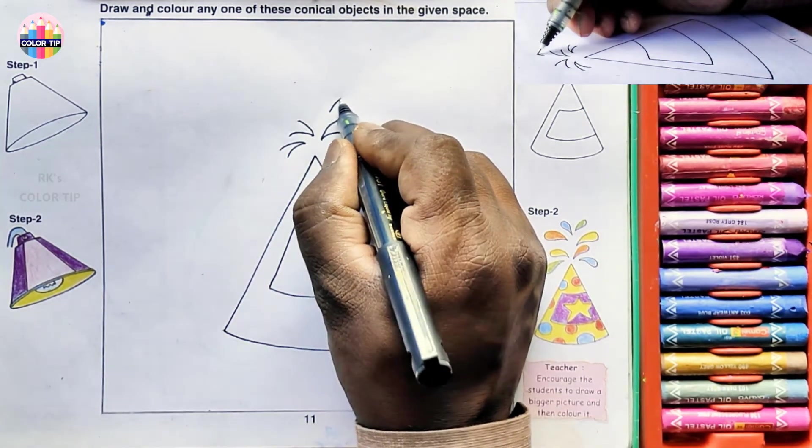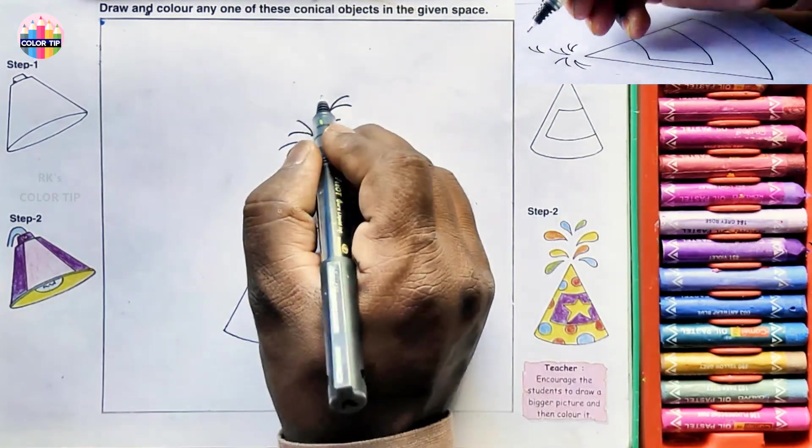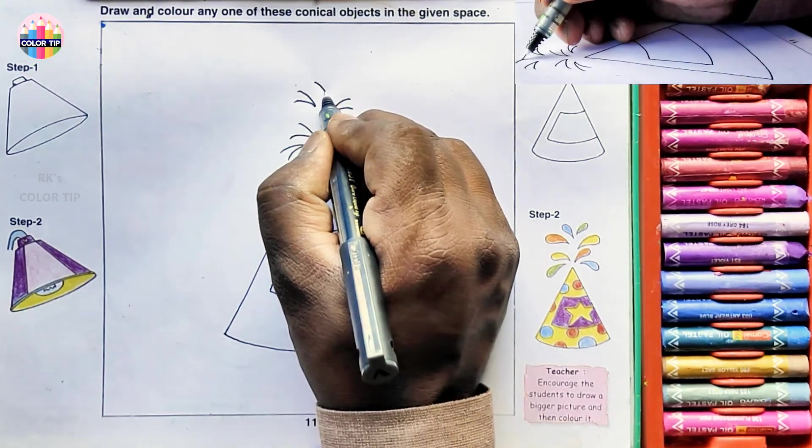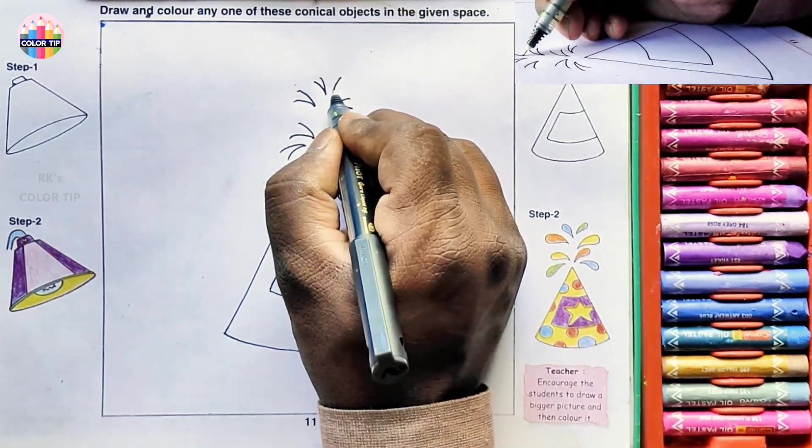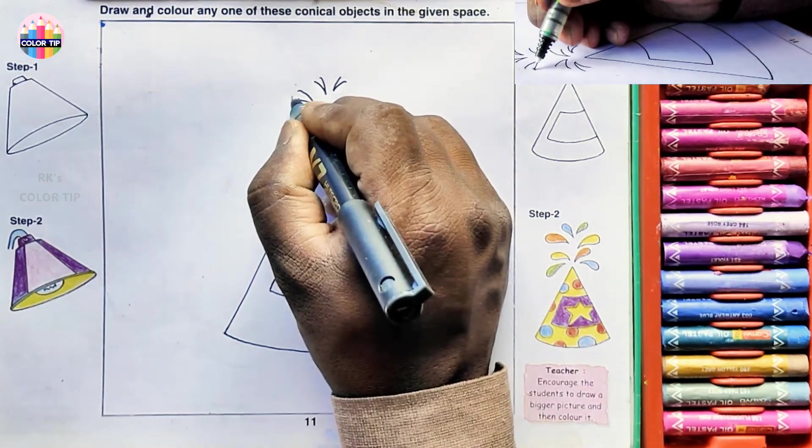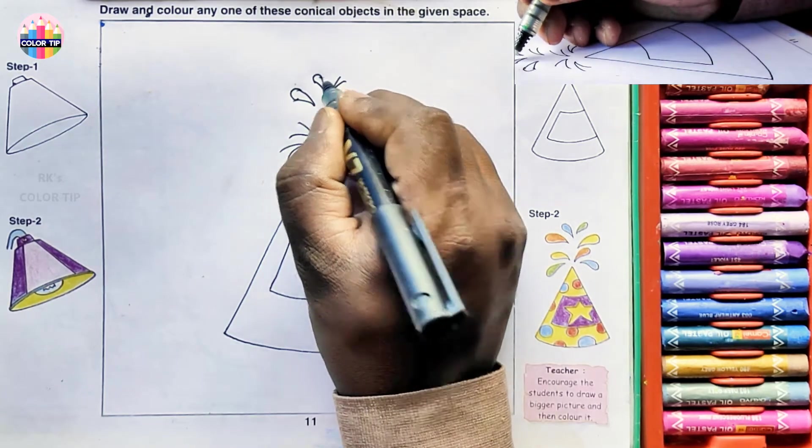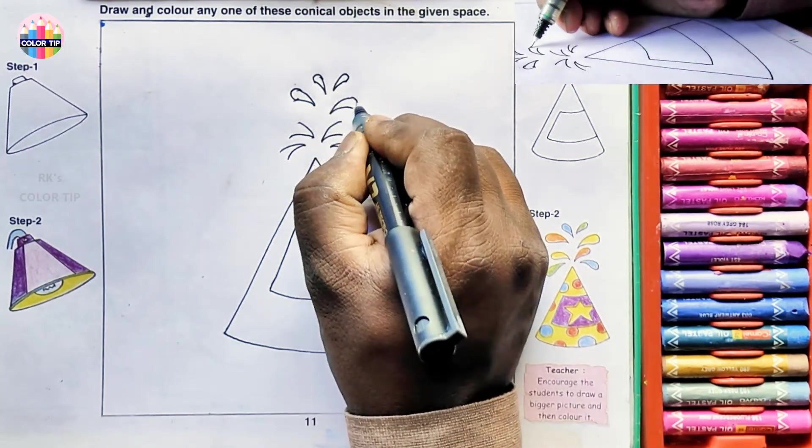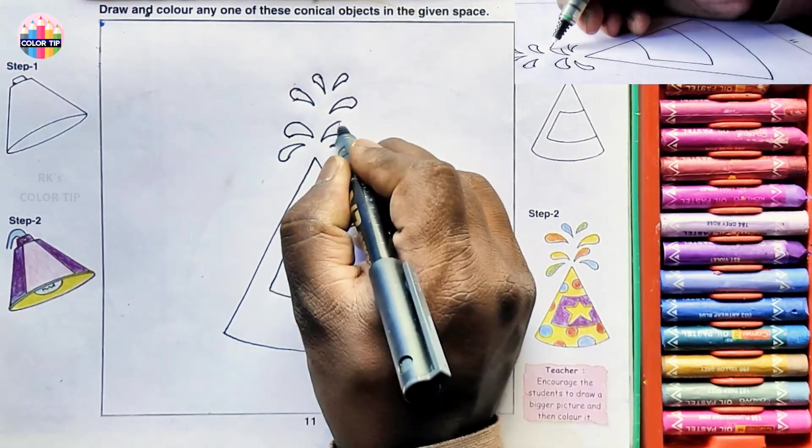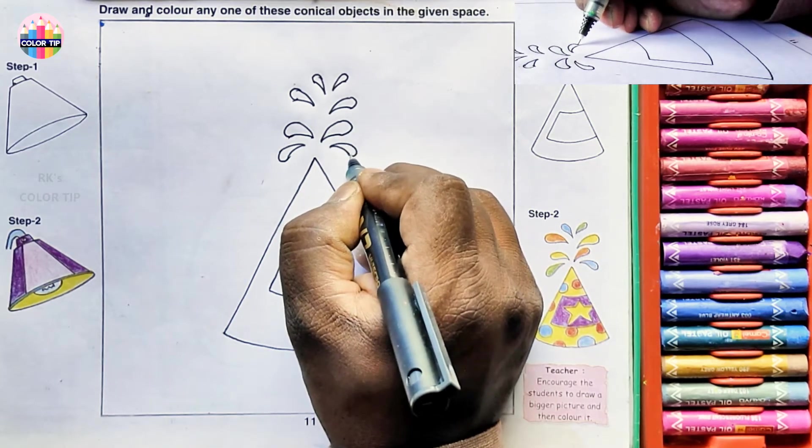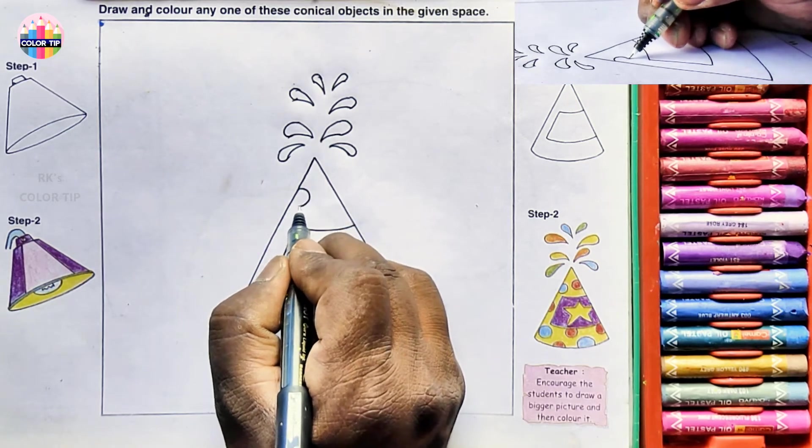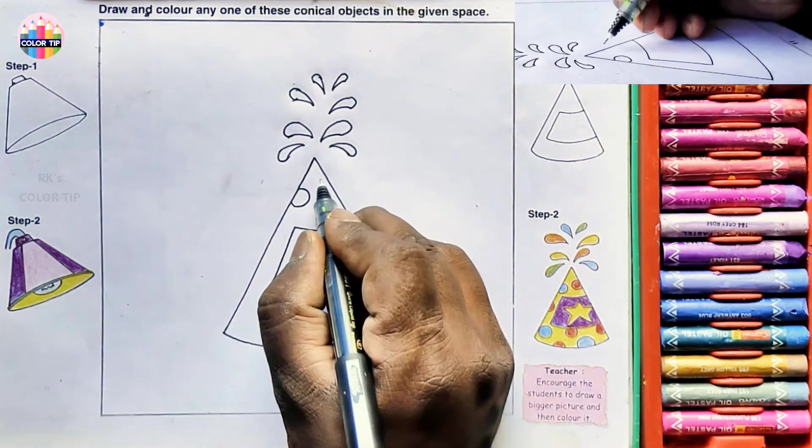And above this, right over here. Now I'm going to join all these with a semicircle, round semicircles. Draw all these with semicircles. Here at the left face, draw one semicircle, and this one just above this.